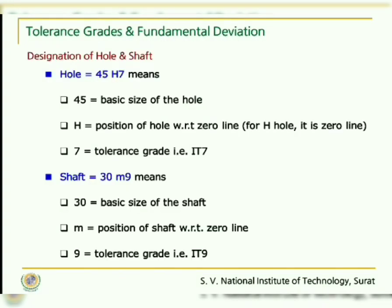Let us understand the designation of hole and shaft with an example. A hole 45H7 means: 45 indicates the basic size of the hole, capital H indicates the position of the hole with respect to the zero line — recollecting that H hole is the basic hole on the zero line, so the fundamental deviation is zero — and 7 indicates the tolerance grade IT7. Similarly, for shaft 30M9: 30 indicates the basic size, M indicates the position of the shaft with respect to the zero line where the fundamental deviation is positive above the zero line, and 9 indicates tolerance grade IT9.